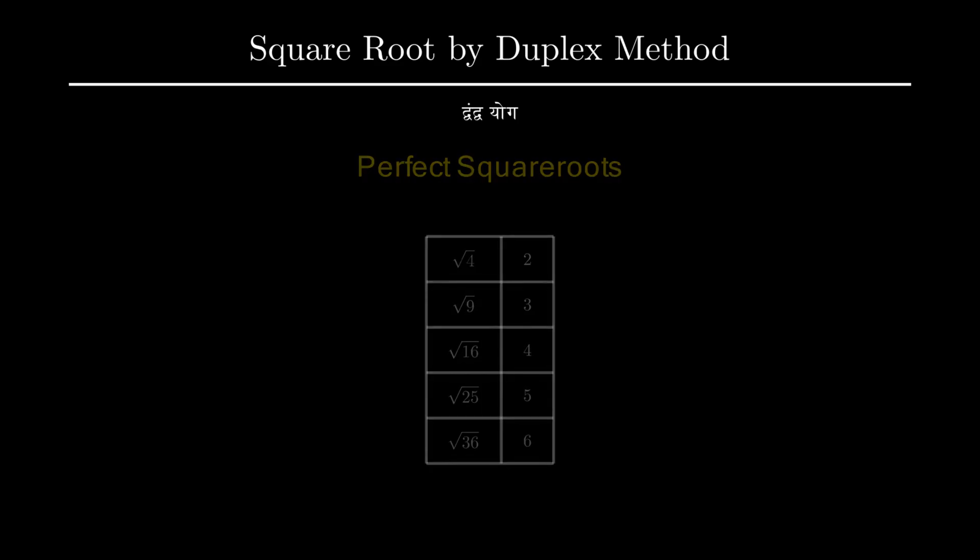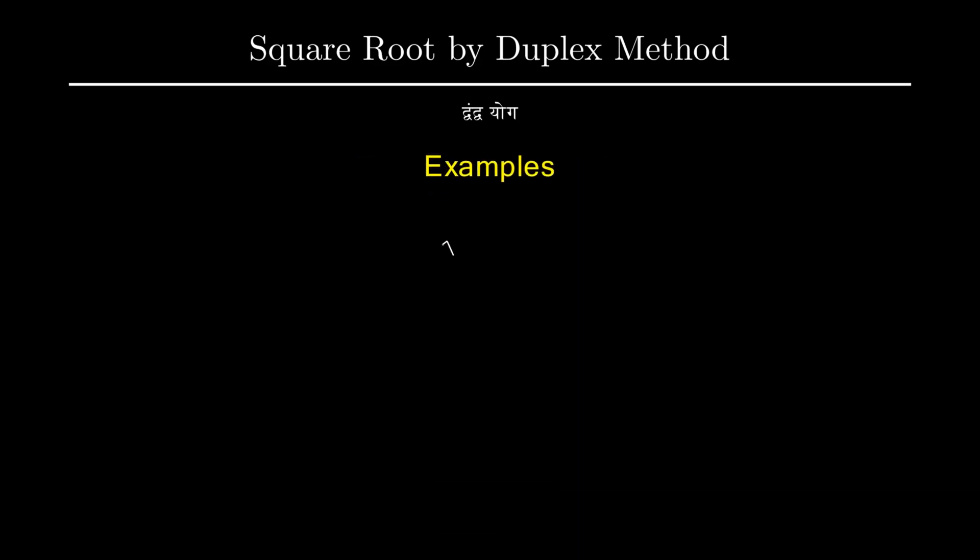Let us jump to our first example. The first example is 1156. The first step is to count the number of digits in the number. Clearly n here is 4. Since number of digits is 4 which is even...